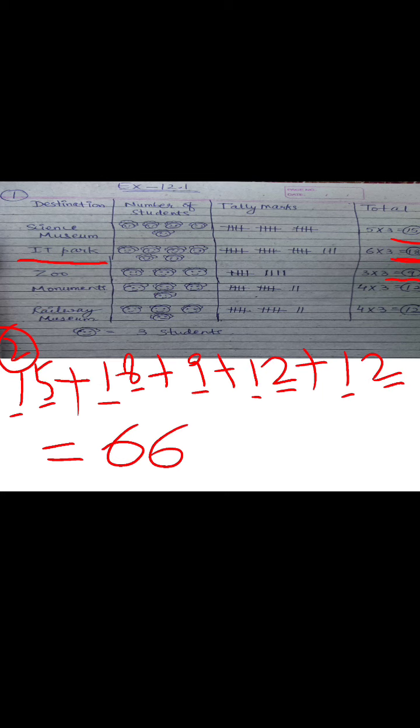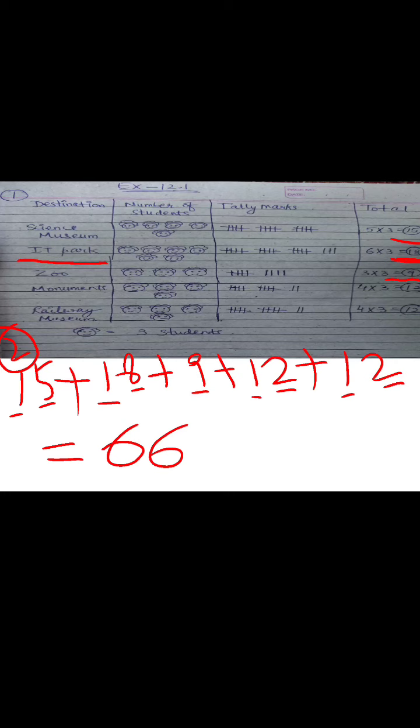Next: which two visits are equally liked? Obviously, where there are equal numbers of students. So this is Monument and Railway Museum, because Monument has a total of 12 students and Railway Museum also has a total of 12 students. So Monument and Railway Museum are equally liked.